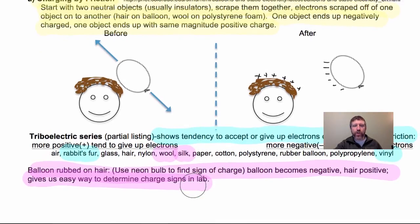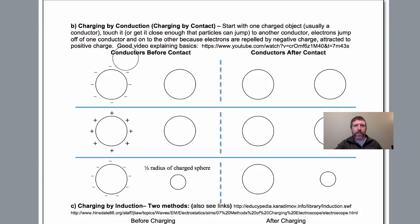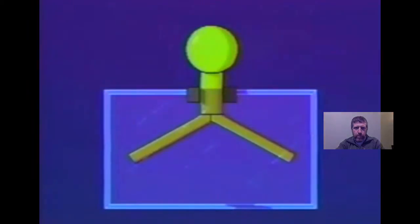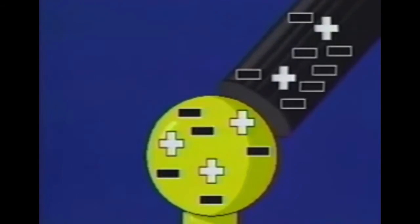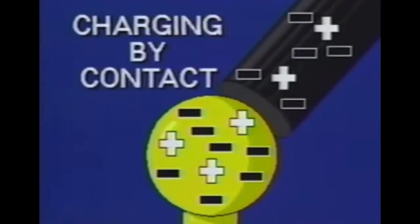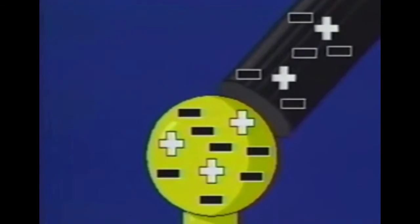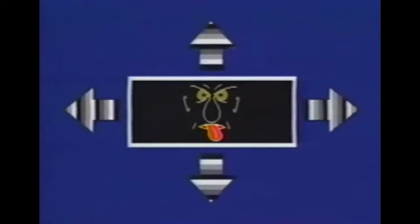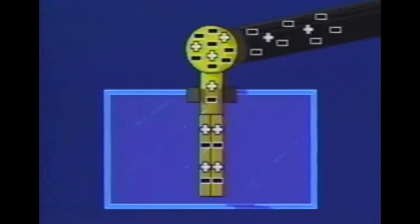The next method of charging is what we call charging by conduction. The initial charge on the electroscope is neutral. When the electroscope knob is touched by a negatively charged rod, a number of electrons jump onto the neutral knob — we call this process charging by contact. Each electron repels every other electron, and the repulsive force causes them to move as far apart as possible. Since the electroscope is metal, the electrons spread themselves uniformly throughout the entire electroscope.